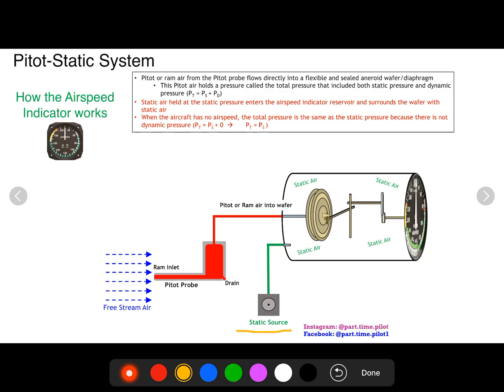So free stream air goes into the pitot probe into the sealed diaphragm. Now the airspeed indicator also uses static air. Static air goes in and surrounds this diaphragm. So if the aircraft is not moving, our dynamic pressure, because velocity is zero, is zero. So our total pressure is equal to our static pressure.